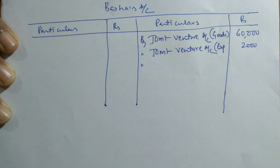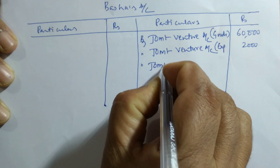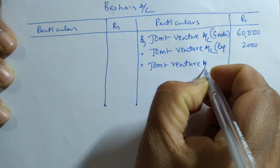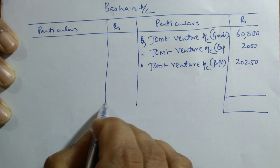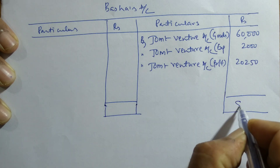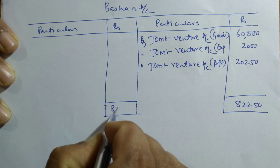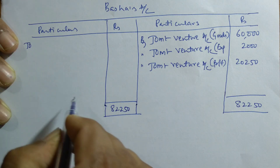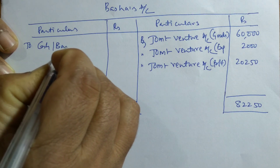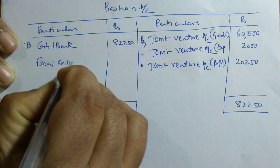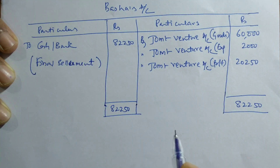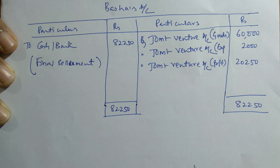The profit on joint venture business, rupees 20,250, should also be taken to Basha's account — it is profit, rupees 20,250. No other transactions. We close this account by totaling rupees 82,250. The difference will be either cash or bank — rupees 82,250. This is the final settlement. In this way, the joint venture account and Basha's account are prepared in the books of Asha.